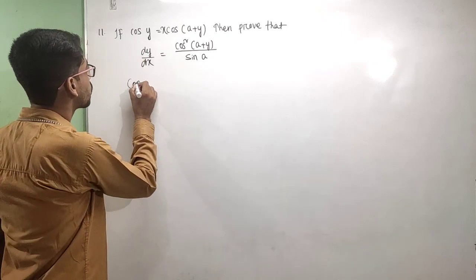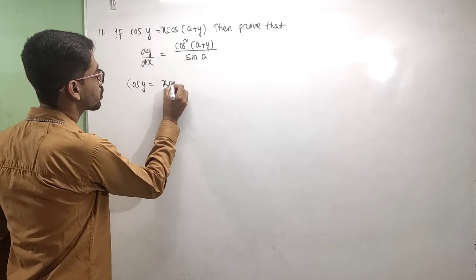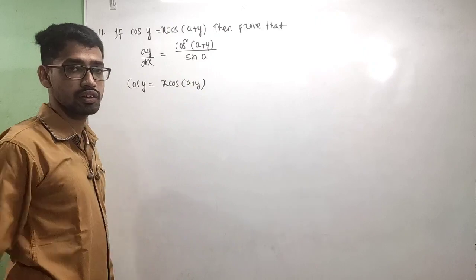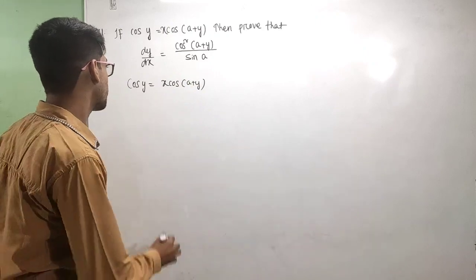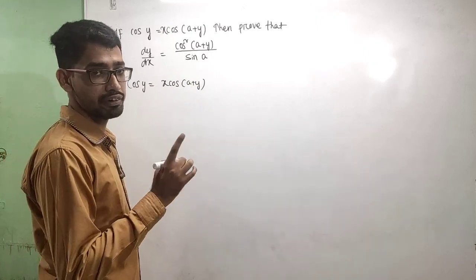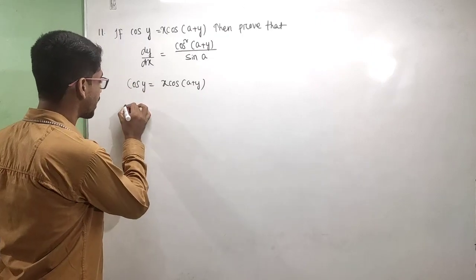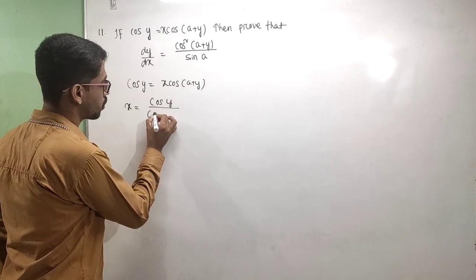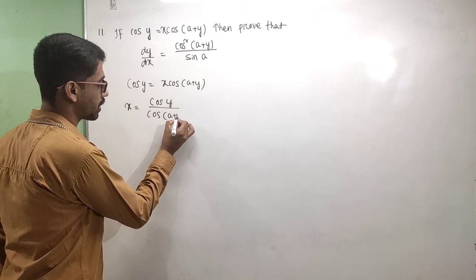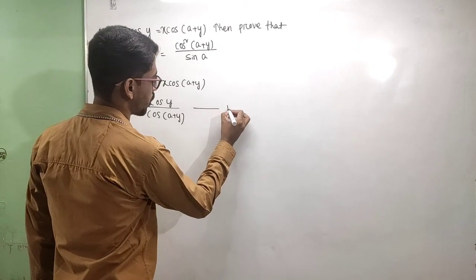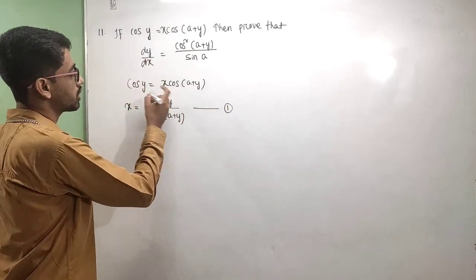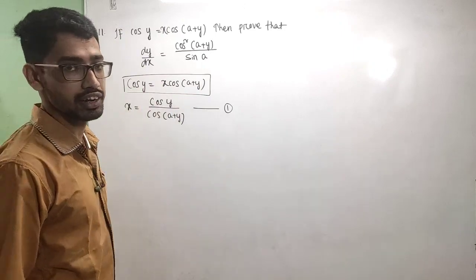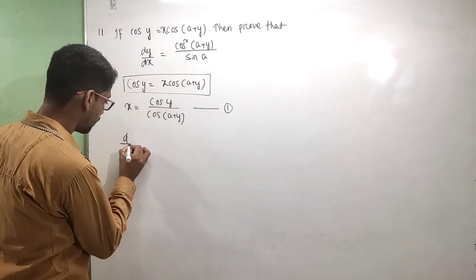cos y is equal to x·cos(a + y). Differentiating both sides with respect to x. From question one, next we go to question two — differentiating both sides with respect to x, taking the derivative.